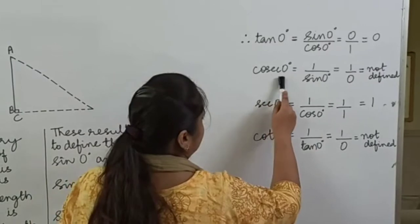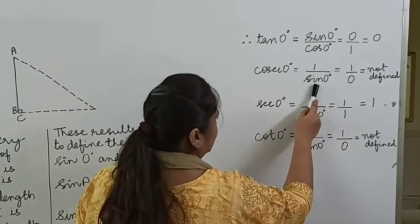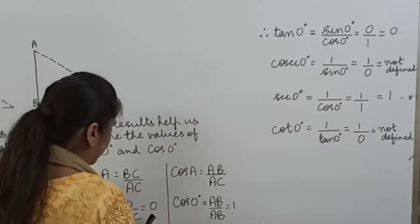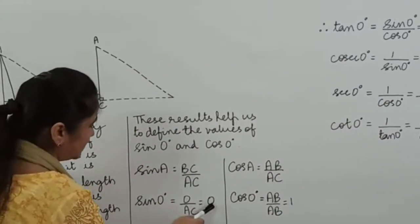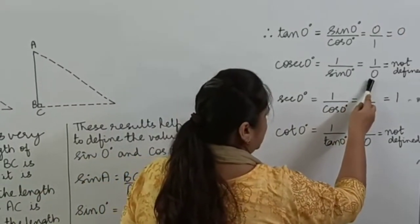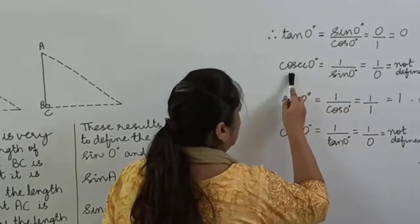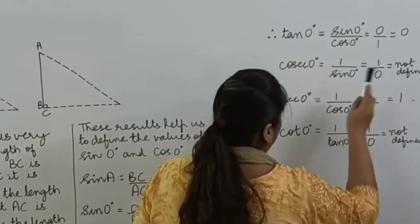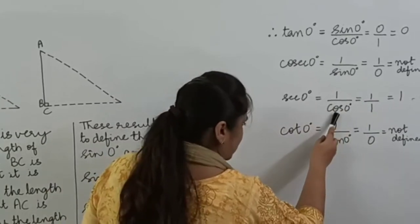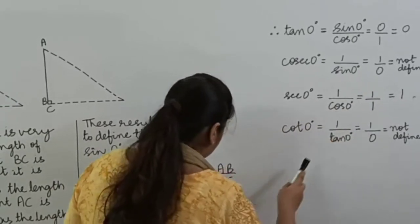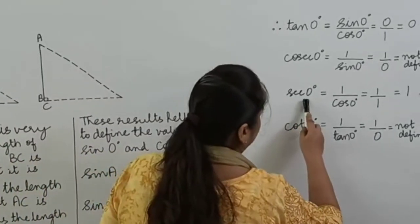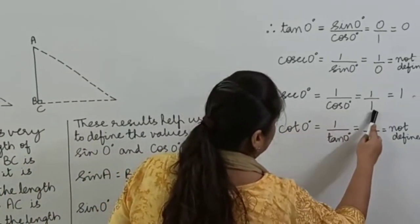Cosec 0 degrees is the reciprocal of sine 0 degrees, which would be 1 over 0. Since sine 0 degrees is 0, we get 1 over 0, and division by 0 is not defined. So the value of cosec 0 degrees is not defined. Secant 0 degrees is the reciprocal of cos 0 degrees. The value of cos 0 degrees is 1, so secant 0 degrees equals 1 by 1, which is 1.